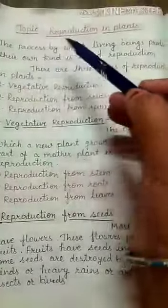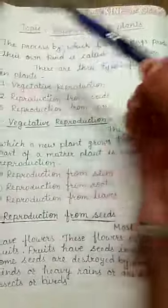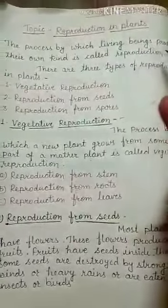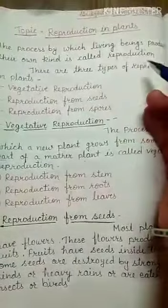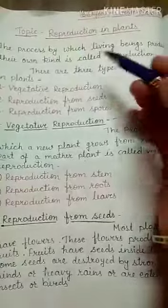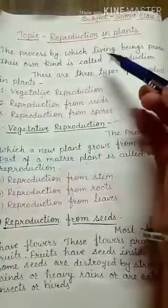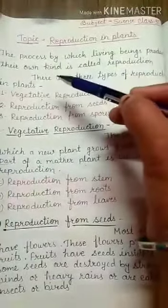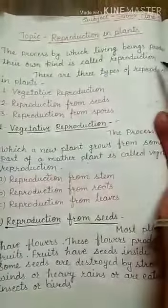What is reproduction? The process by which living beings produce their own kind is called reproduction.